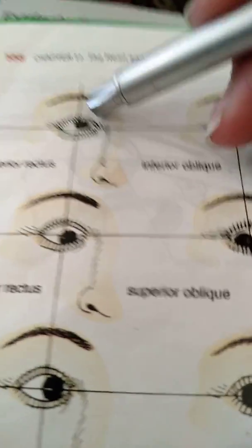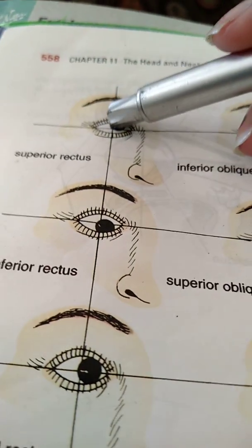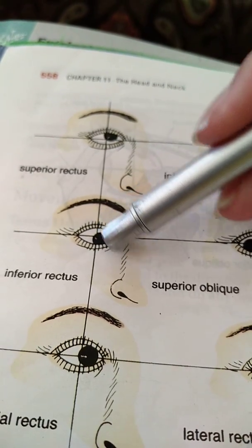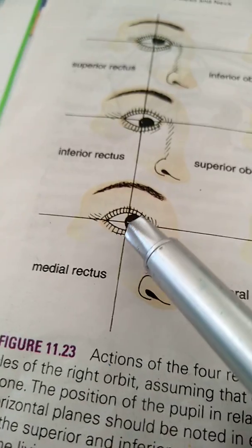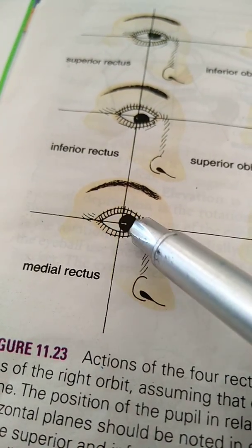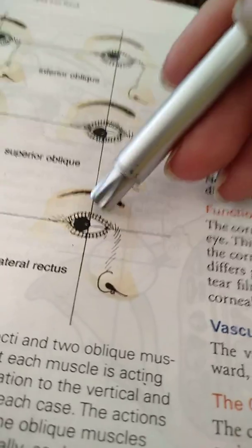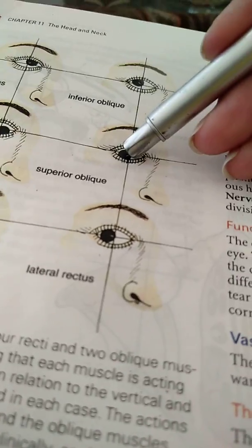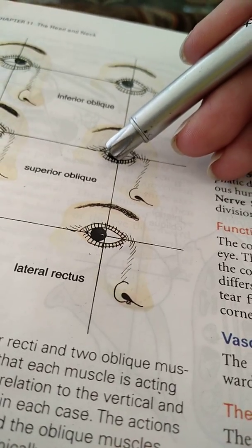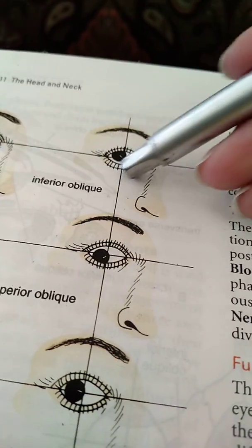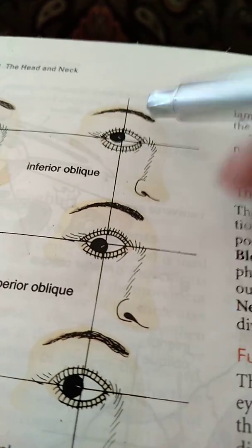Regarding actions: the superior rectus rotates the eyeball so that the cornea moves upward and medially. The inferior rectus rotates the eyeball so the cornea looks downward and medially. The medial rectus rotates the eyeball so the cornea looks medially. The lateral rectus rotates the eyeball so the cornea looks laterally. The superior oblique rotates the eyeball so the cornea looks downward and laterally. The inferior oblique rotates the eyeball so the cornea looks upward and medially.